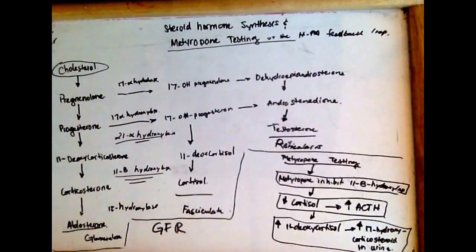If you don't see an increase in 17-hydroxycorticosteroids, it indicates the feedback loop is not functioning properly.